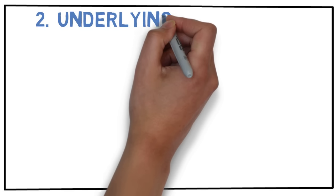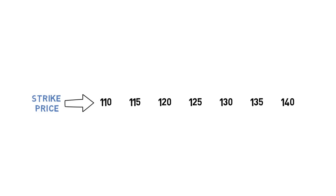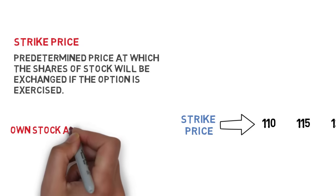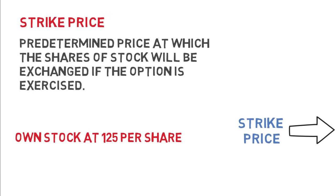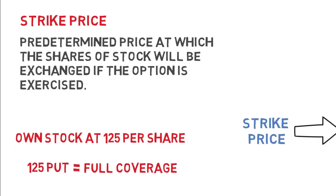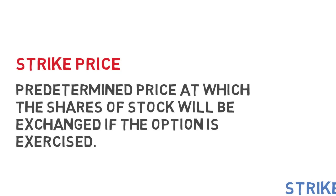The second factor that goes into option pricing is the price of the underlying stock itself. For each stock, there are multiple options at different price increments — these are called the option's strike price. The strike price is the predetermined price at which shares of stock will be exchanged if the option is exercised. For example, if you own the stock at $125 per share, you could buy the $125 put because that's where you could sell your shares if the stock goes lower and you need to exercise your option.